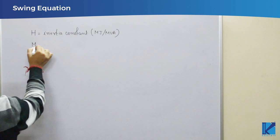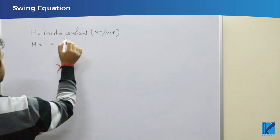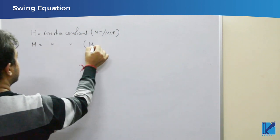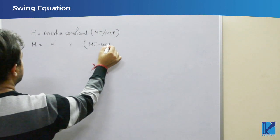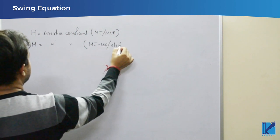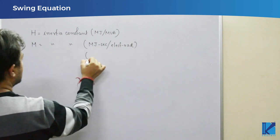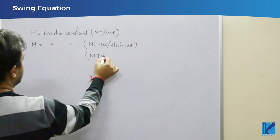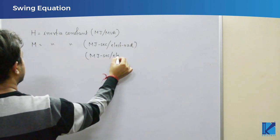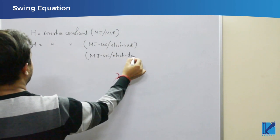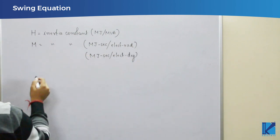H is inertia constant, which has the units of megajoule per MVA. Similarly, M is also called as inertia constant, but its units are megajoule second per electrical radian or megajoule second per electrical degree. There can be two values.